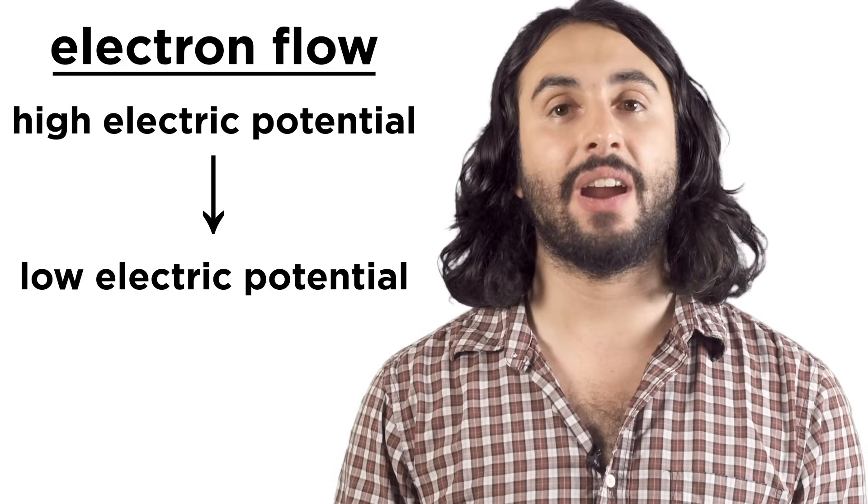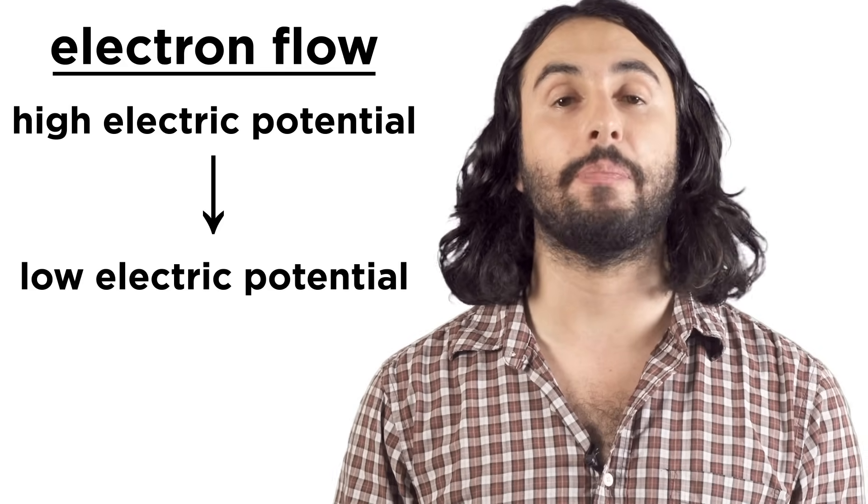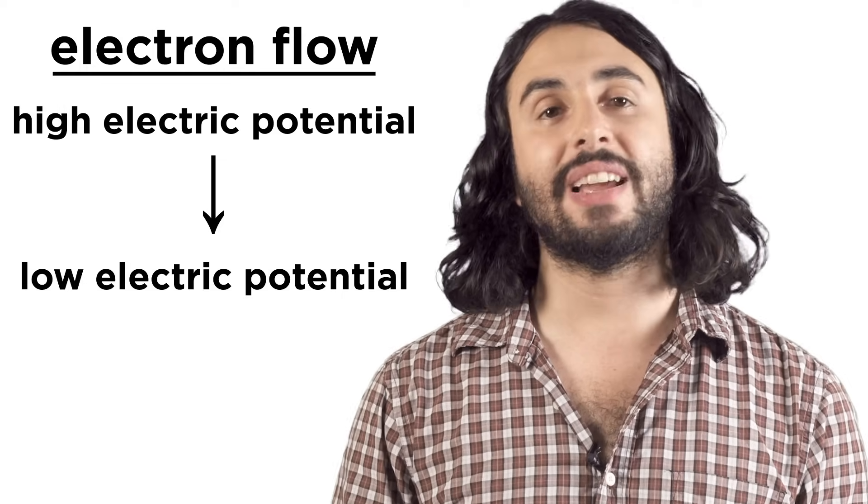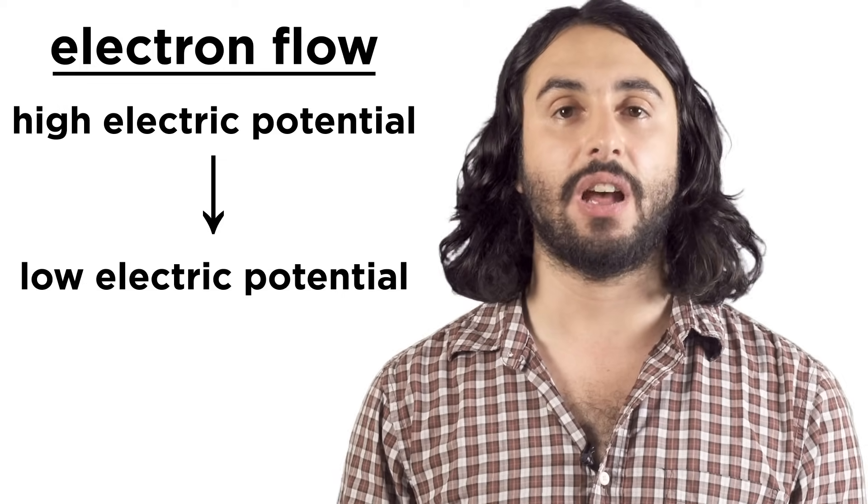Let's try to understand the concept of electron flow. Just as water flows from high pressure to low pressure, electrons flow from areas of high to low electric potential. So electric potential is kind of like electric pressure.